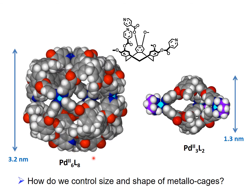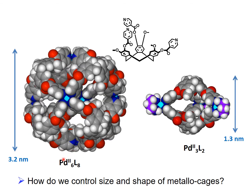The examples I'm going to show here use palladium chemistry — palladium in its 2+ oxidation state. This particular ligand can either form a palladium-6, ligand-8 huge cube-like assembly, or it can form a small cage with 3 palladiums and 2 ligands. In both cases, please notice that the palladium has a square planar geometry. Here are our palladiums in light blue — we can see this square planar geometry on both cages.